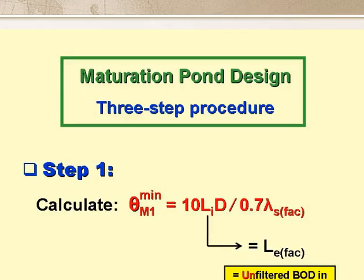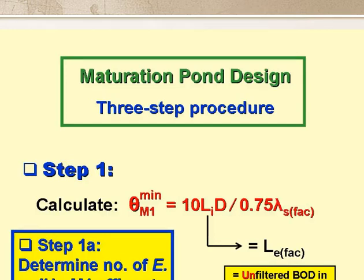We use a three-step procedure for the design of maturation ponds. Step 1 addresses the constraint that the BOD loading on the first maturation pond should be no more than 70% of that on the facultative pond. This version of the lambda s equation gives us the minimum retention time in M1, the first maturation pond, which ensures that the BOD loading constraint on M1 is satisfied. And we would now normally check to see if the effluent from M1 has a low enough E. coli count for restricted or even unrestricted irrigation.